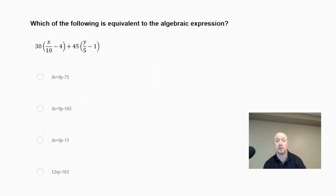Which of the following is equivalent to the algebraic expression? So we have 30 times the quantity x over 10 minus 4 plus 45 times the quantity y over 5 minus 1. So what we want to do in this case here is use the distributive property. We want to multiply through by 30. So we would get 30x over 10 minus 30 times 4 is 120. Plus we're going to multiply through by 45 for the next set of parentheses. So we get 45y over 5 minus 45.